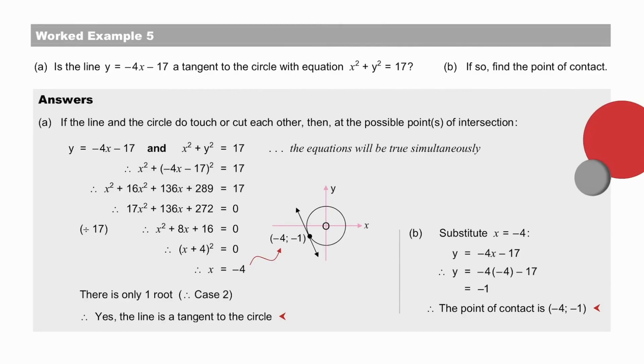Pause to check your answers to worked example 5. Is the line a tangent to the circle? At the possible points of intersection, the equations will be true simultaneously. So, we solve the equations, and we find x equal to minus 4. There is only one root, and yes, therefore, the line is a tangent to the circle. To find the point of contact, we substitute x equal to minus 4, and find the point minus 4, minus 1.